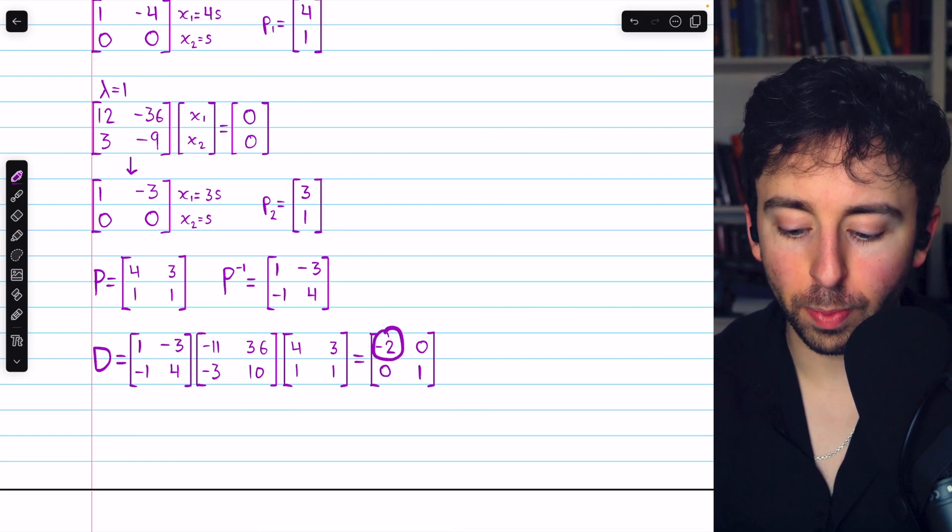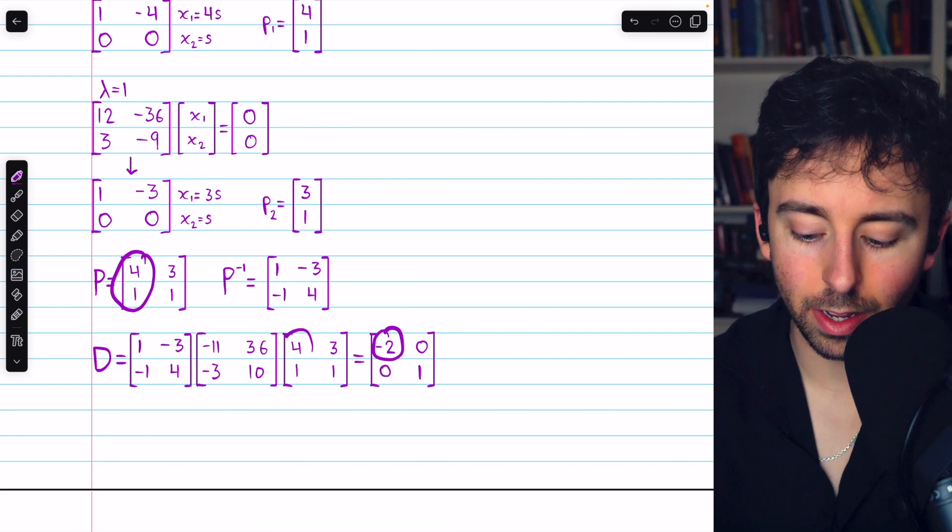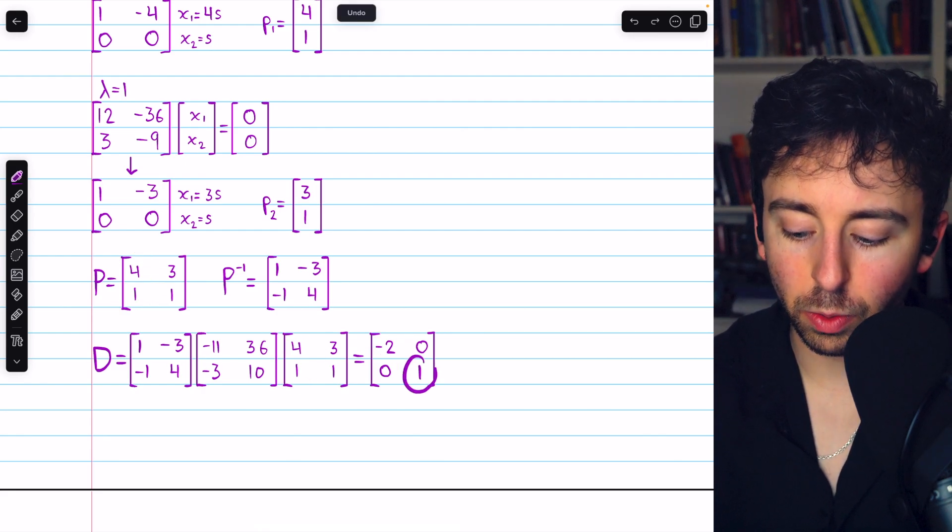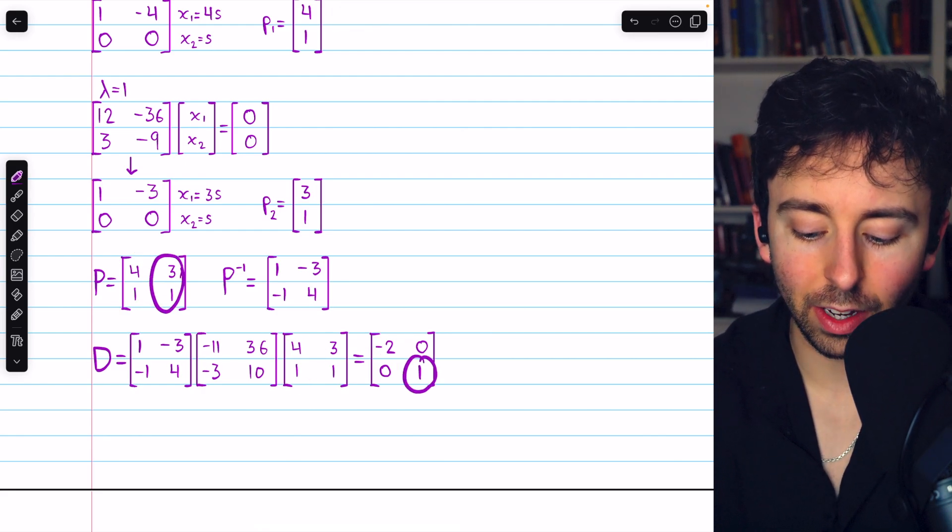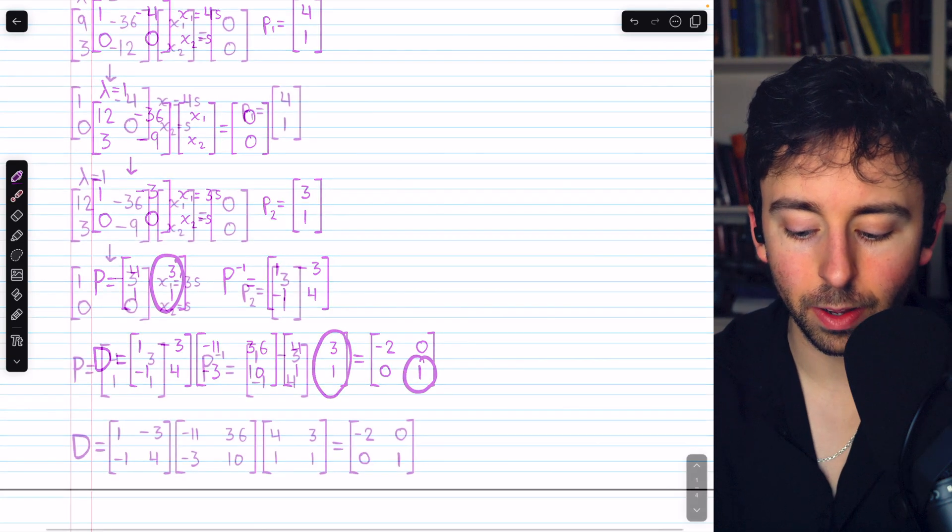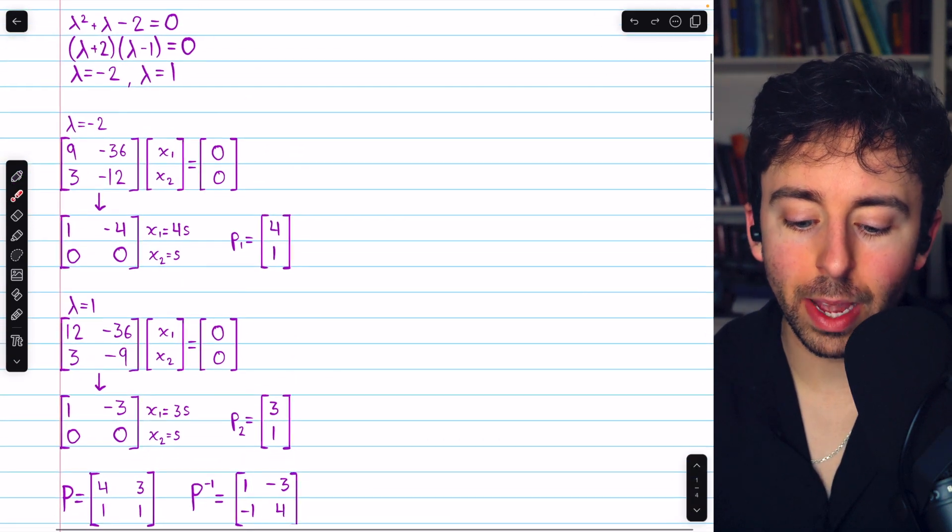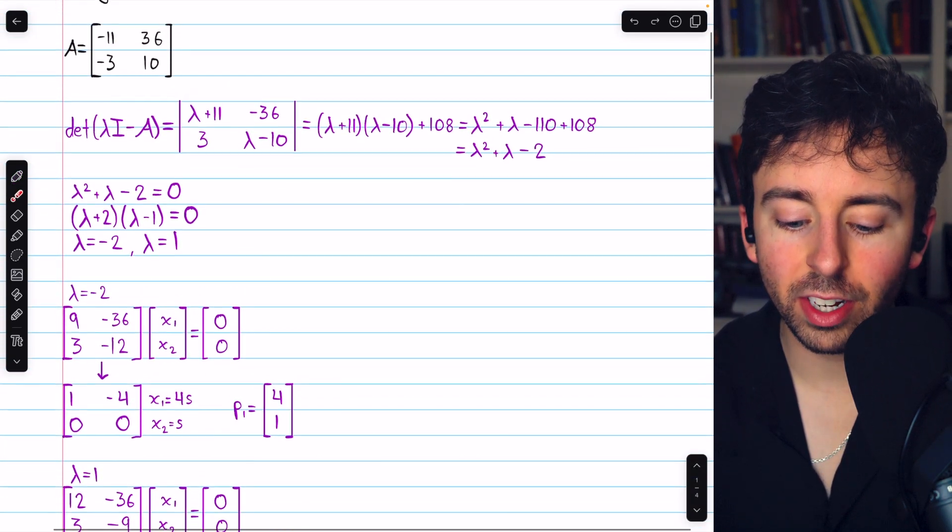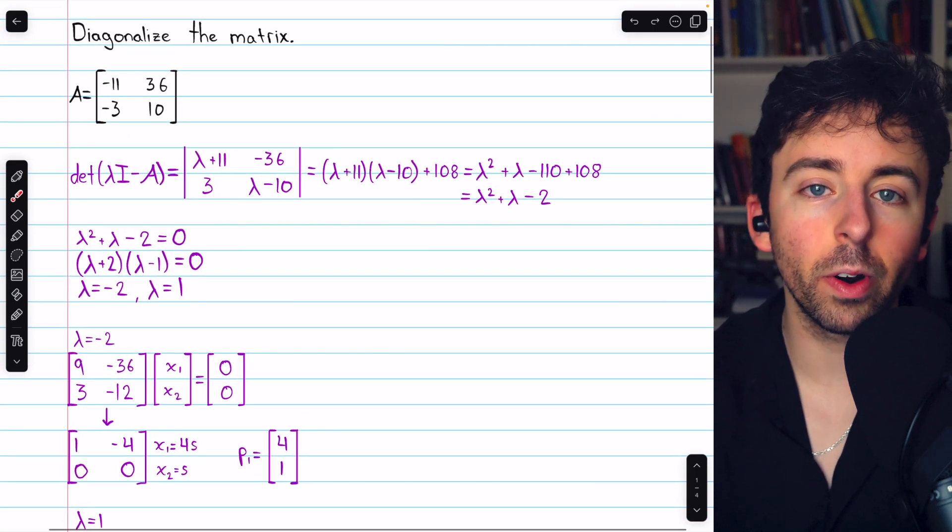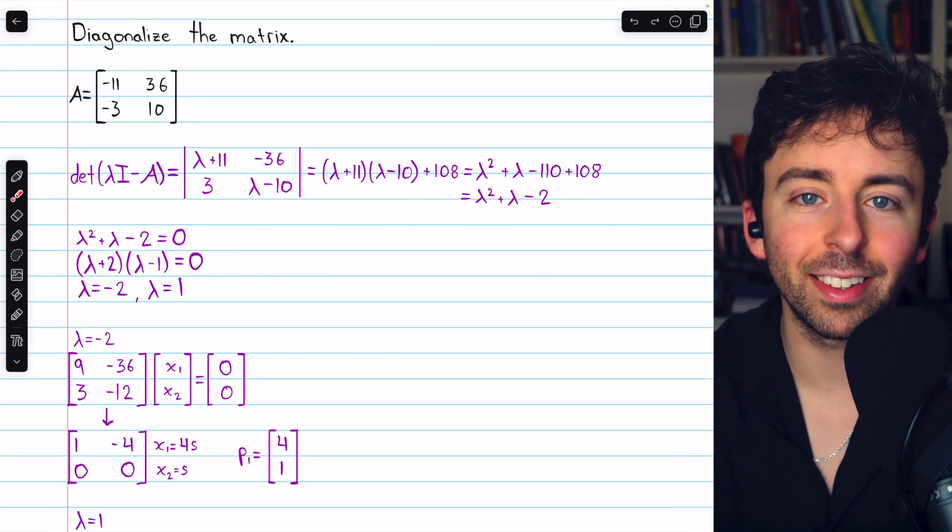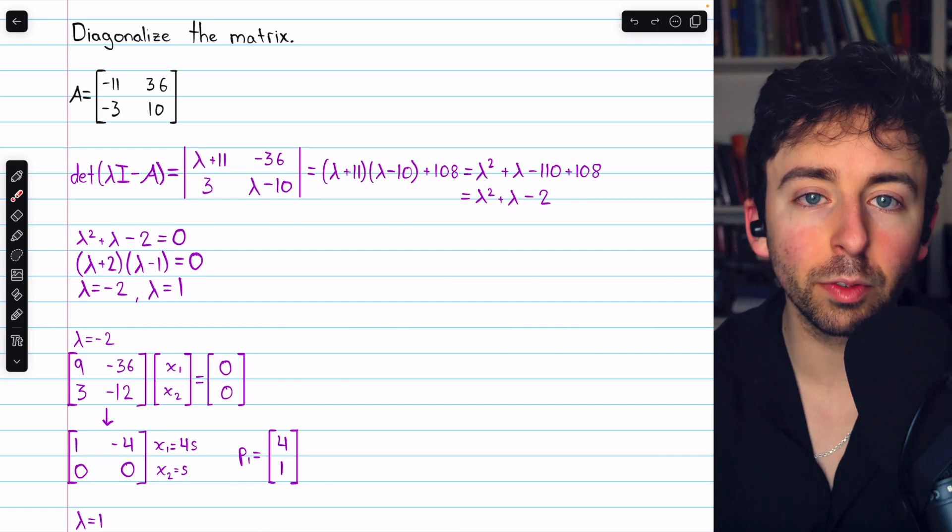The first eigenvalue corresponds to the first eigenvector that we used in P, and the second eigenvalue corresponds to the second eigenvector that we used in P. And that's how to diagonalize a 2×2 matrix. Let me know in the comments if you have any questions, and be sure to check out my linear algebra course and linear algebra exercises playlists in the description for more. Thanks for watching.